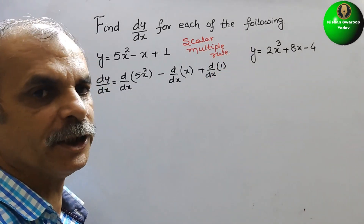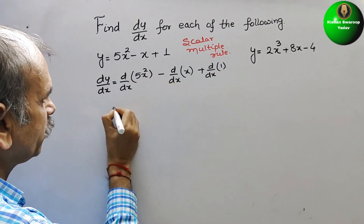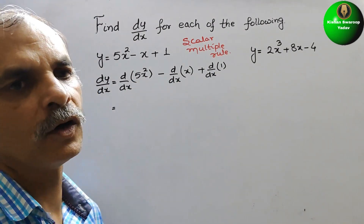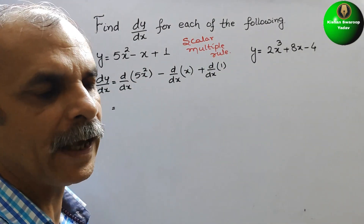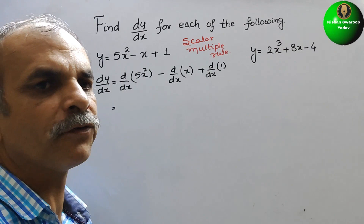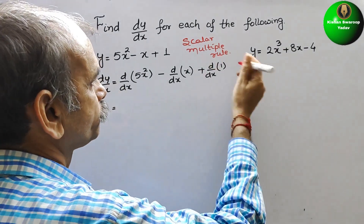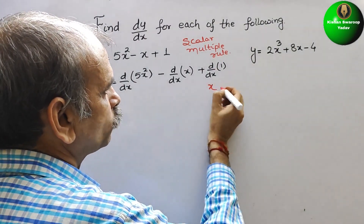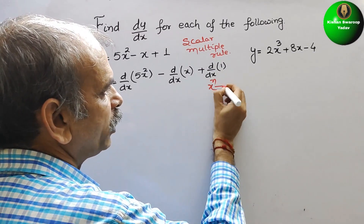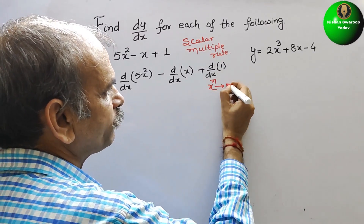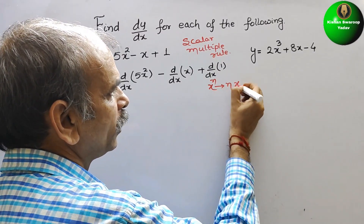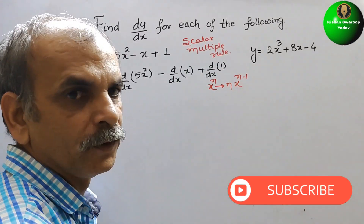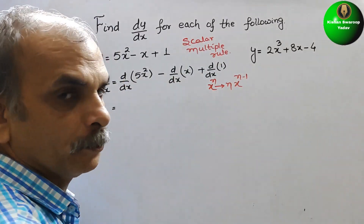Now differentiate. We will follow the formula: d/dx of x^n = n·x^(n-1). This value we have to put here.